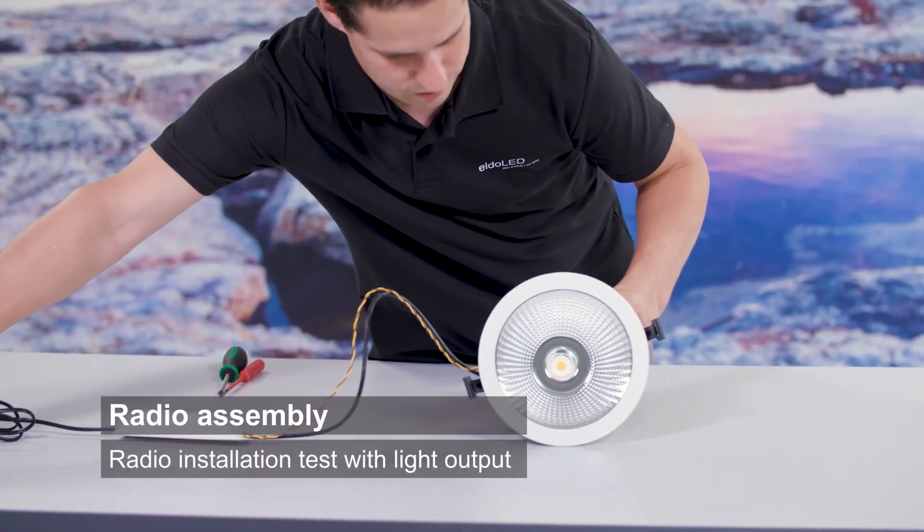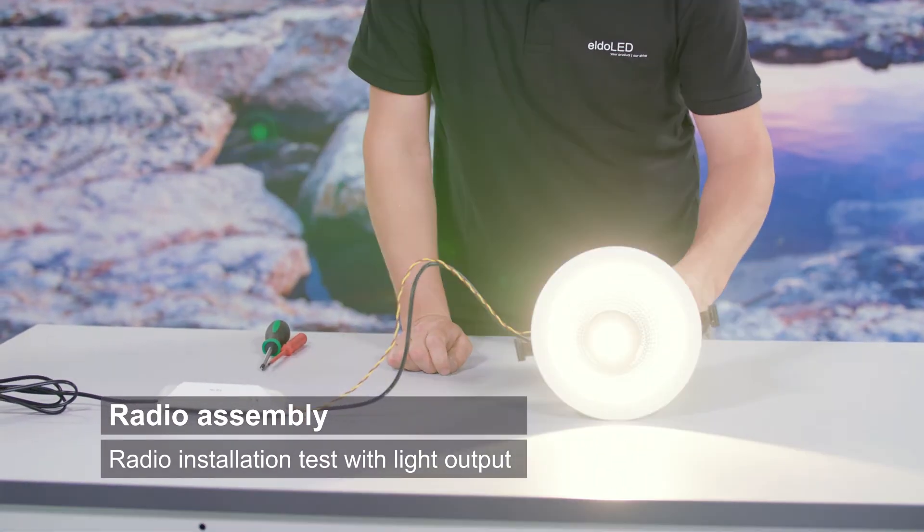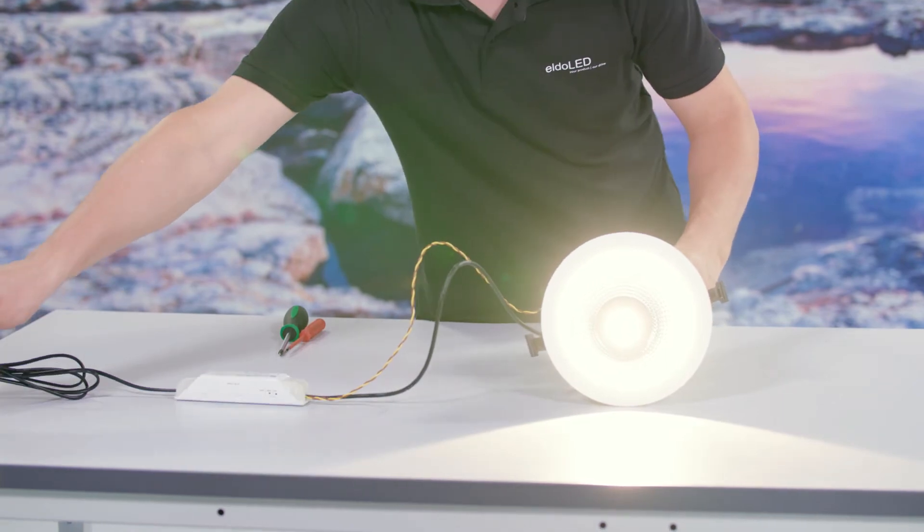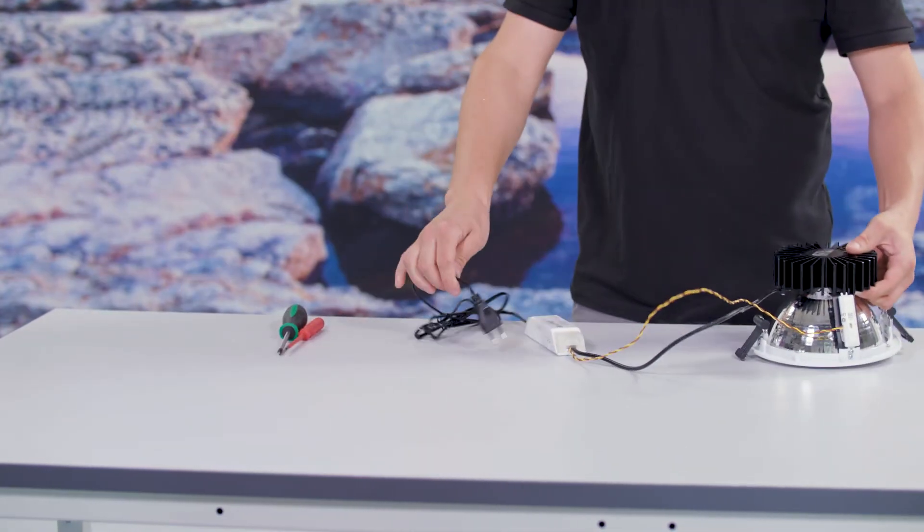Connect the luminaire to a power outlet for light output testing to make sure all connections were made correctly. Unplug the power before you continue to the next steps.